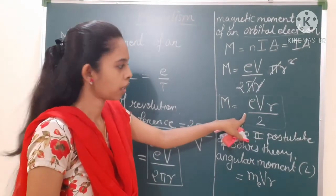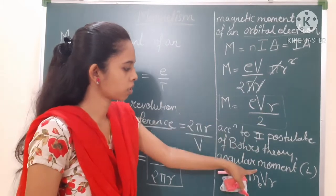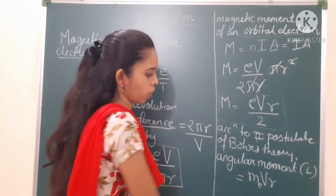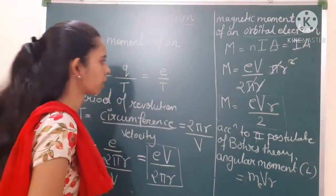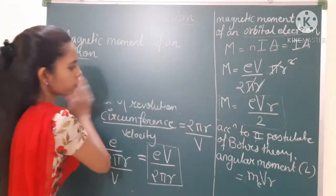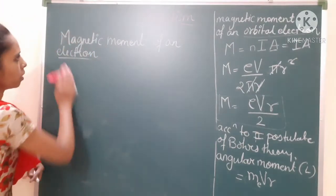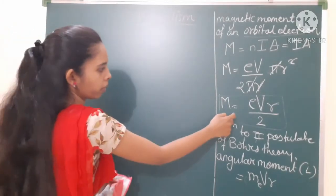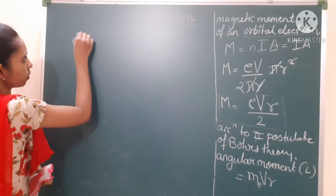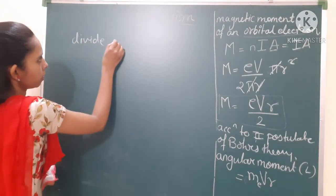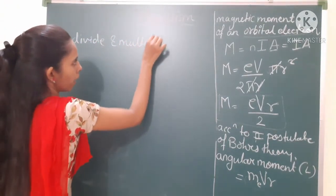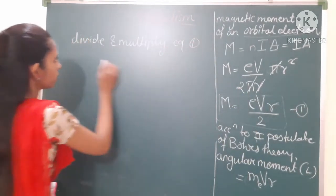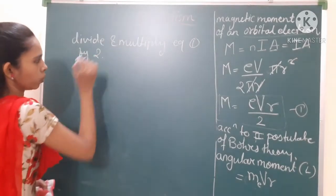We can see that in the equation M = evr/2, there is already velocity v and radius r, but mass m is not present. To introduce it, we will divide and multiply equation number 1 by the mass of the electron m.